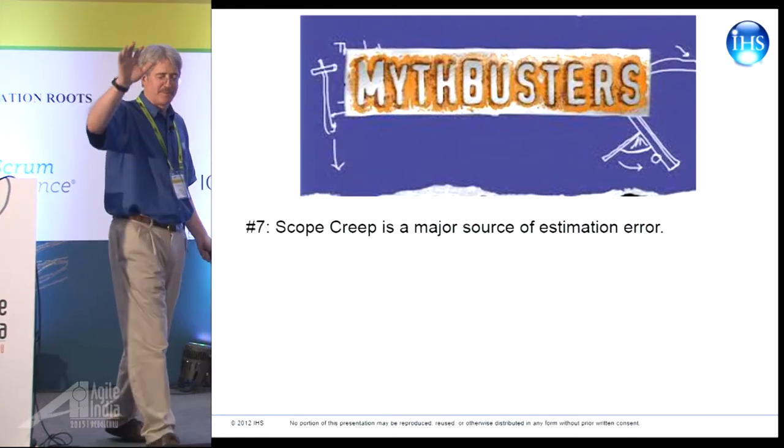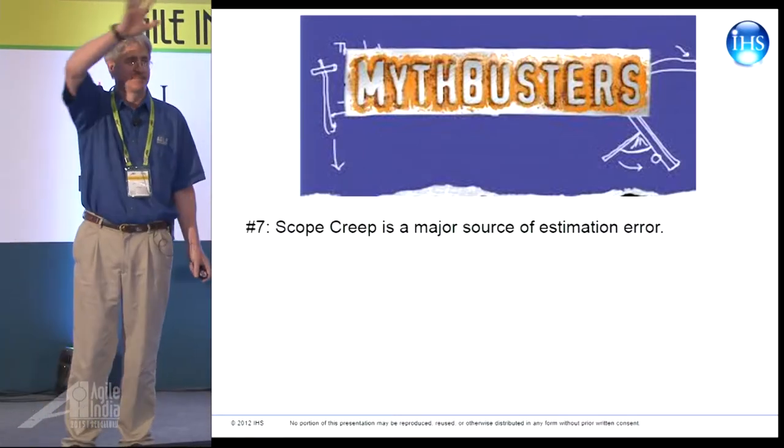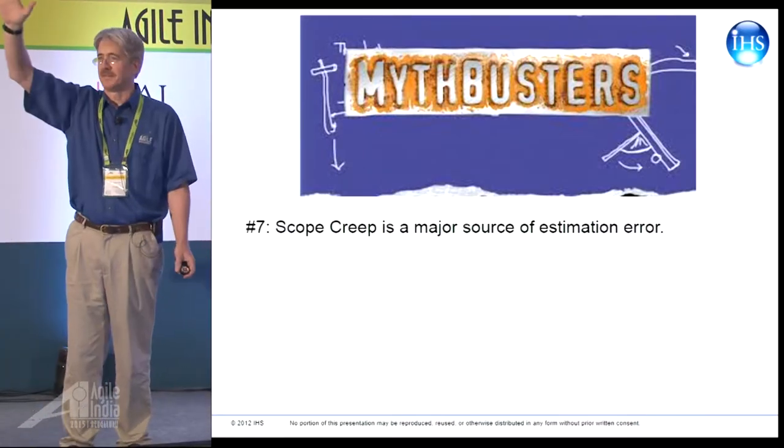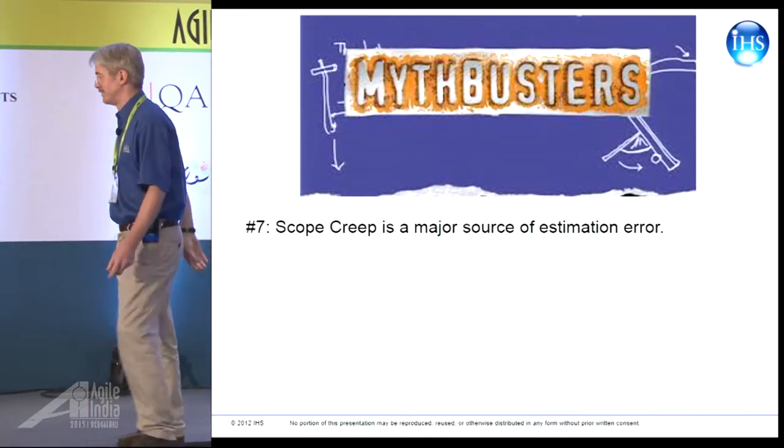Myth seven: scope creep is a major source of estimation error. Sounds like that one's an easy one.